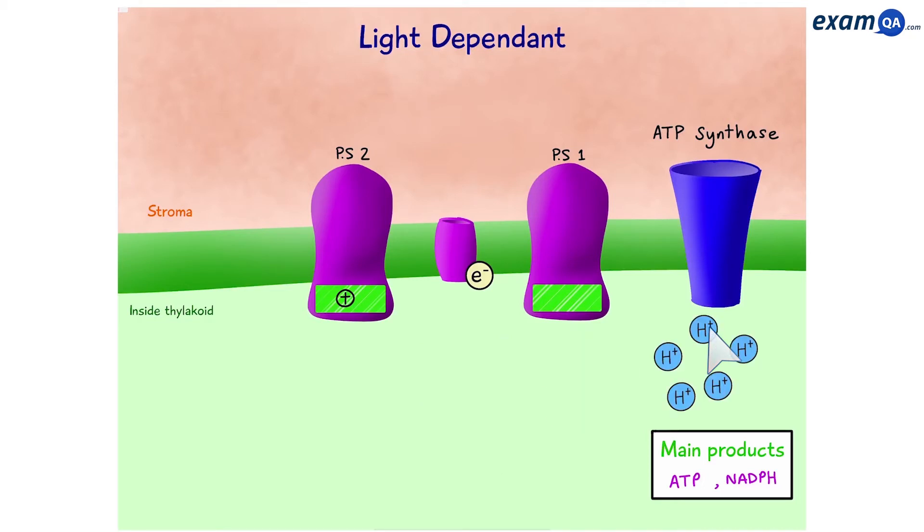So, this is where ATP synthase comes in. The hydrogen ions are going to pass through the ATP synthase ion channel. At the same time, the movement of hydrogen ions through the channel will drive the process of combining ADP and inorganic phosphate to form ATP. So, if those hydrogen ions did not go through the channel, we would not be able to make ATP.